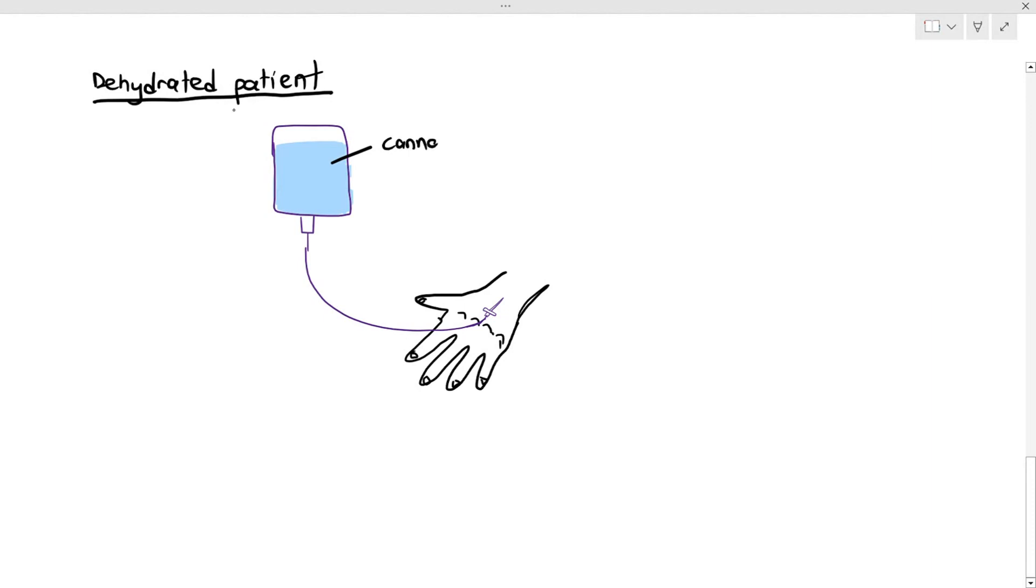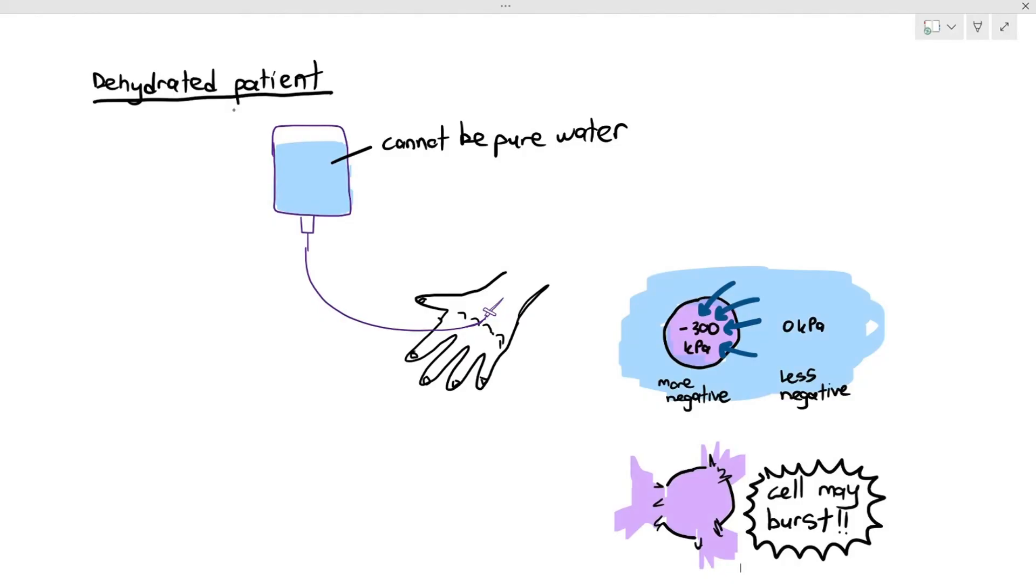But if the patient is dehydrated where they have a lack of water, what kind of liquid should be inside the bag? It cannot be pure water or distilled water. Students will say, wait, the patient is dehydrated. They don't have enough water. So I should give them pure water. No, if you give them pure water or distilled water, you might kill them. Because remember, when you give distilled water, distilled water has a water potential of zero kilopascals. It may go directly into the cells of the patient and may cause the cells to swell or burst.